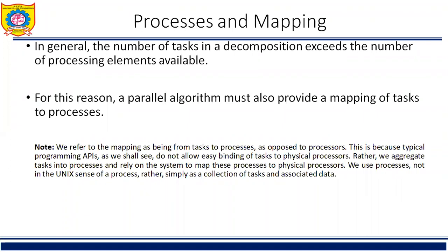Previously we have seen the decomposition. In decomposition we learned what is task interaction graph, what is task dependency graph, and critical path. Decomposition has given us the number of subtasks, and those tasks are now executed independently. Tasks are executed independently by separate processors, so we require a processor to map on that task — that is called processes and its mapping.